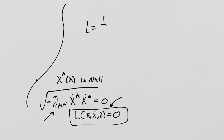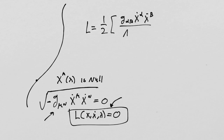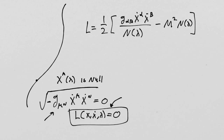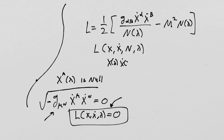That Lagrangian looks like this: it's one-half g-alpha-beta x-dot-alpha x-dot-beta divided by an auxiliary function of lambda only, minus a constant m-squared times the same auxiliary function. Now, because of this auxiliary function, L is a function of the generalized coordinate x, the derivative of x, n, and of course lambda. Remember x was a function of lambda, x-dot was a function of lambda, n is a function of lambda, so everything's still a function of those parameter values.